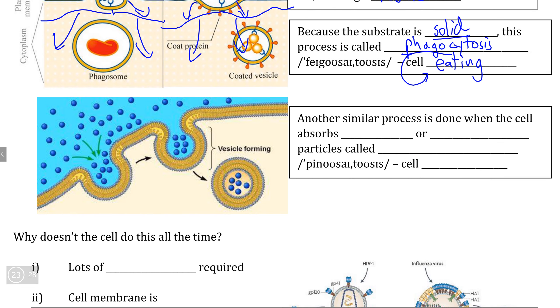Now, a similar but slightly distinctive process is where the cell absorbs certain liquid particles. So for example, if the cell needs to take in a large amount of water molecules, or if the cell wants to take in a large number of aqueous particles—the best example of these are ions such as Na+ or Cl-—